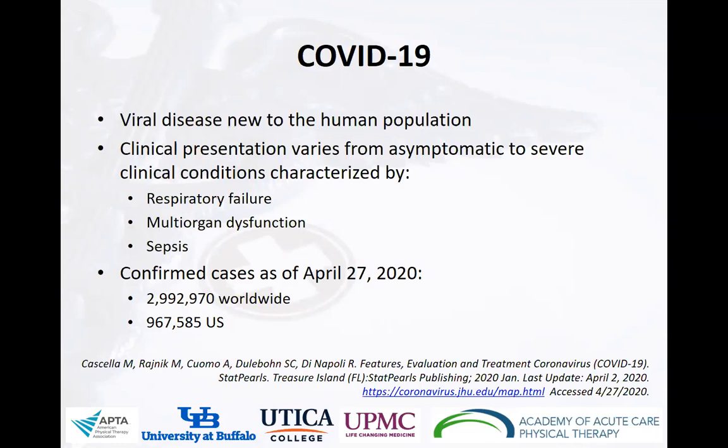We won't be discussing that here today, but I do want to mention that cases of COVID-19 are often varied in their severity of clinical presentation. They can present or even progress as severely as resulting in respiratory failure, multi-organ failure, or sepsis — some of the exact conditions that result in the need for care in an intensive care or critical care unit of a hospital.